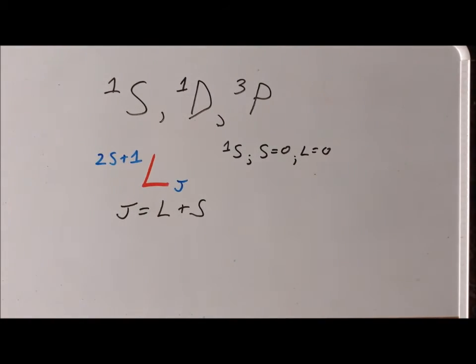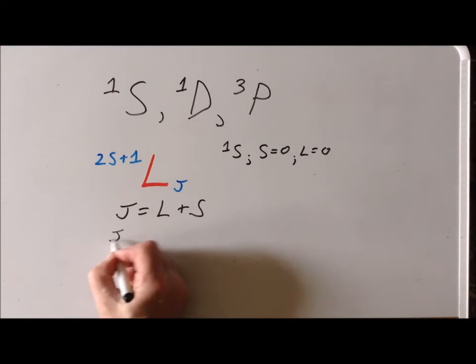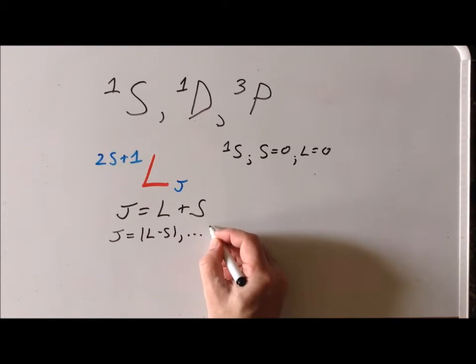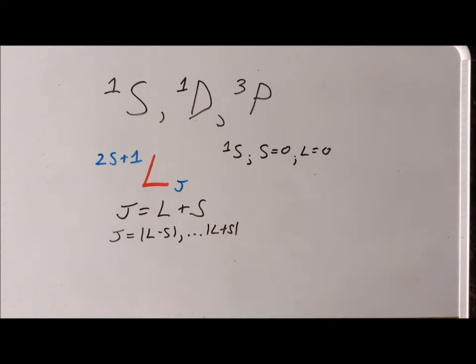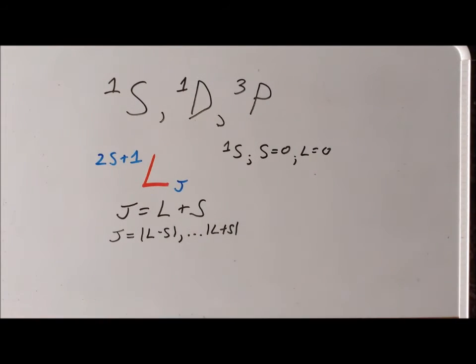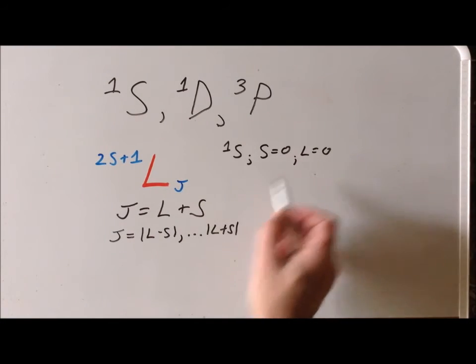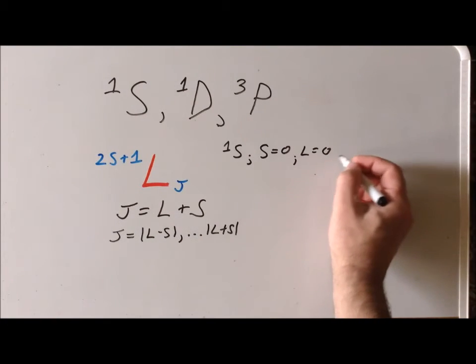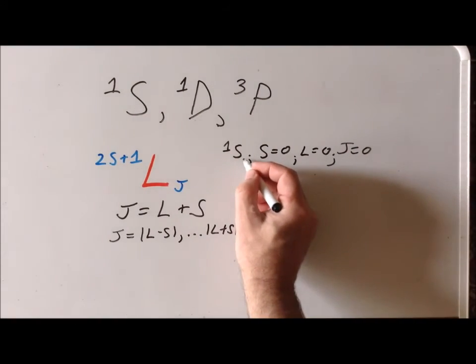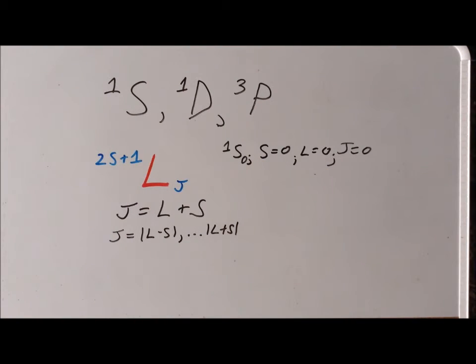When we write out the exact values of this, J goes from the absolute value of L minus S up to L plus S. We need the absolute value there, so these are going to be the possible J values. Well, since S and L are both zero, it goes from 0 to 0, so that tells us there's only one J value possible and that's going to be equal to 0. So the complete term symbol here would have a zero.